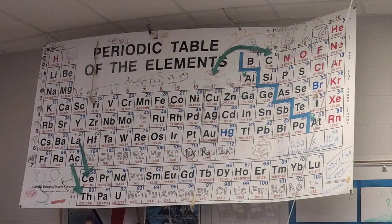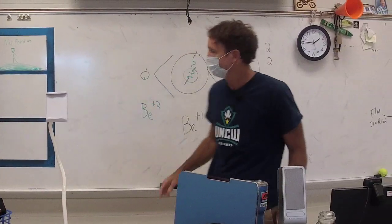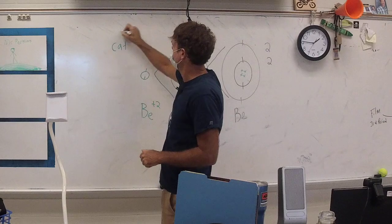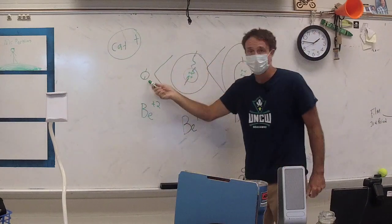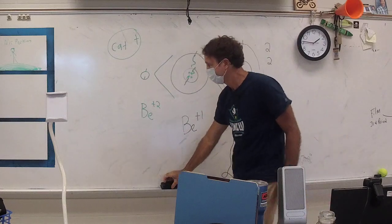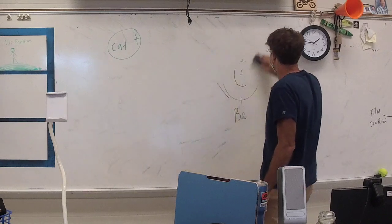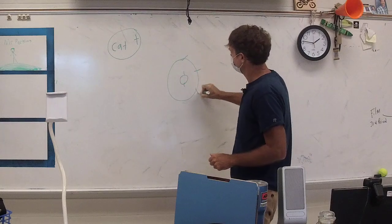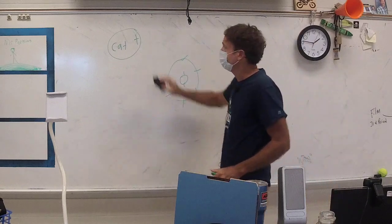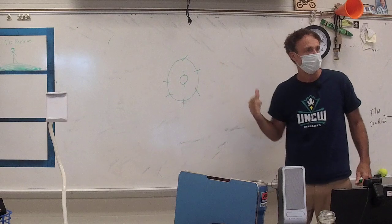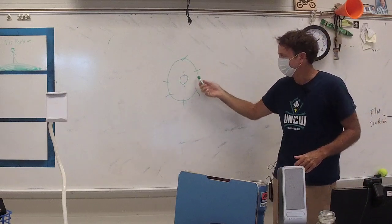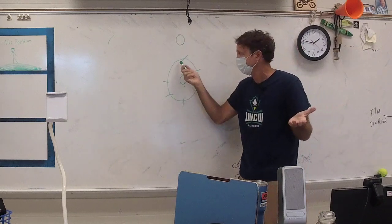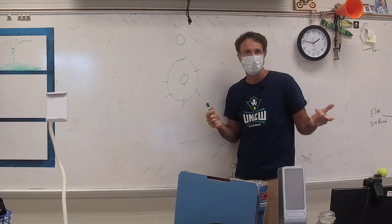Now let's look at this in the complete opposite way. I've been talking about cations, which are positive — atoms losing their electrons. The atoms to the right of the stairs, like oxygen, end up gaining electrons. Oxygen already has six valence electrons. The magic number is eight, so is oxygen more likely to lose six electrons or just gain two more? It's going to gain two more.